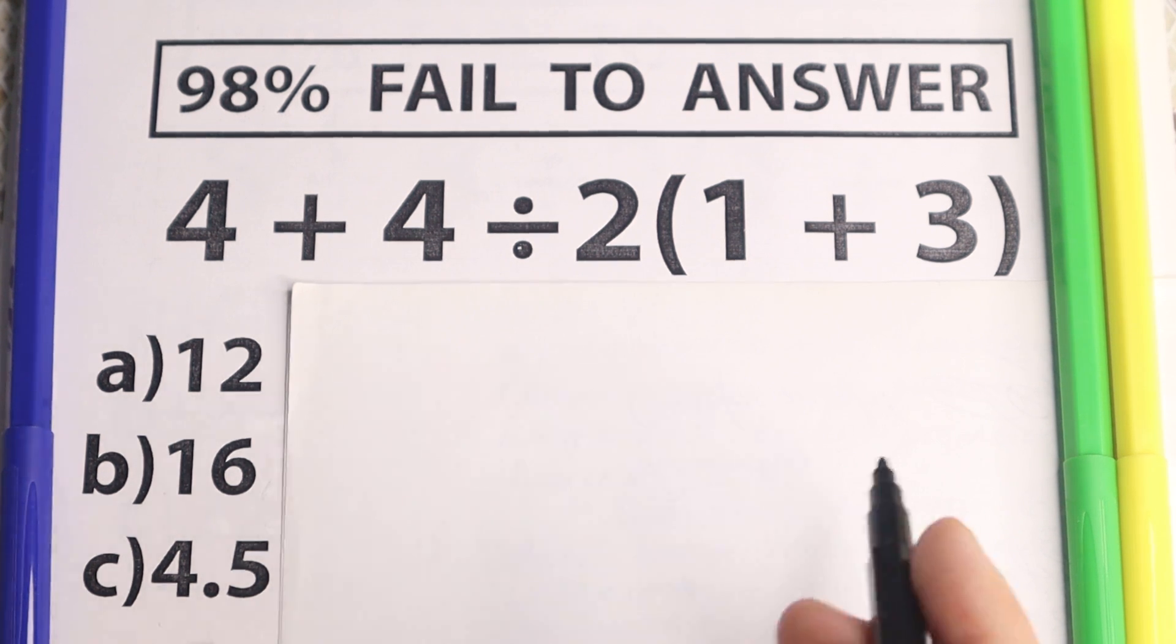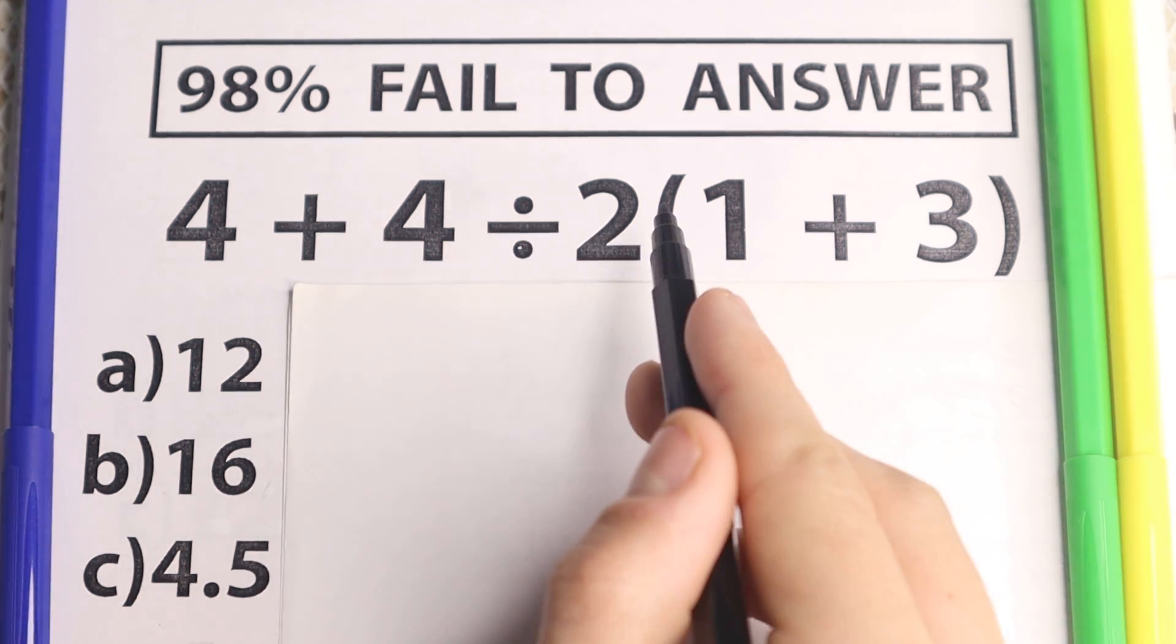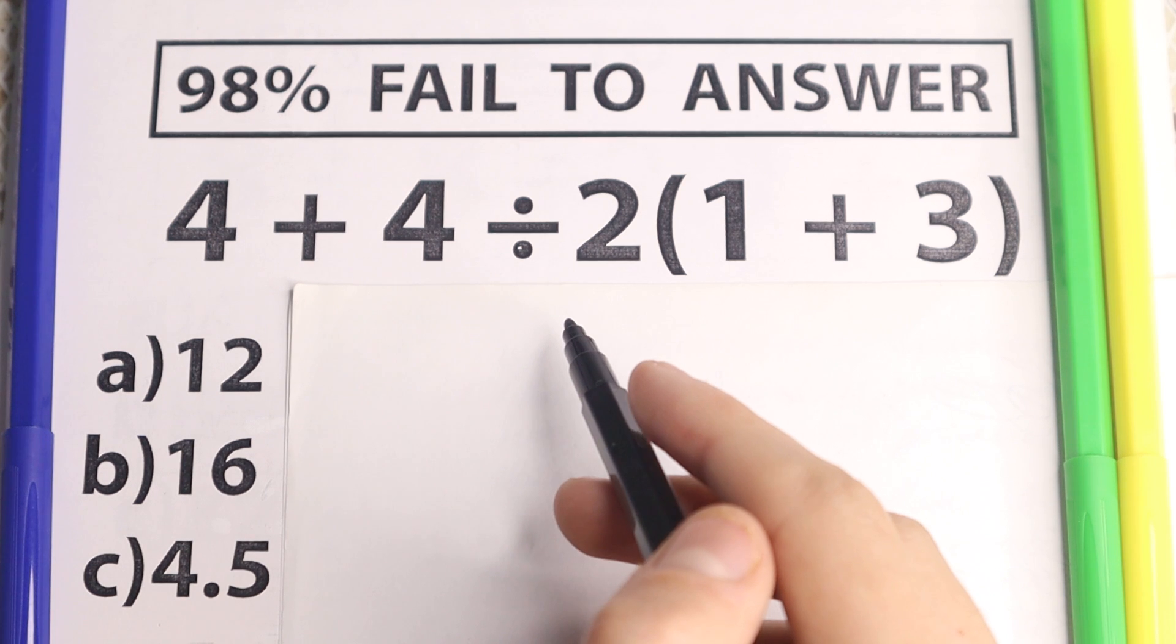So I do want you to use your calculator right here, because as you can see, this is a very simple problem. 4 plus 4 divided by 2 and times, in parentheses, we have 1 plus 3.